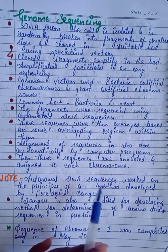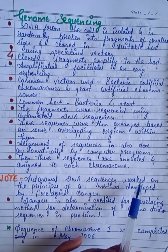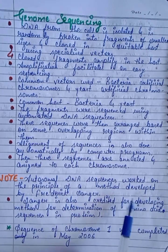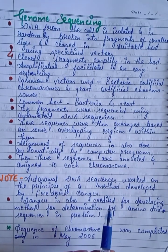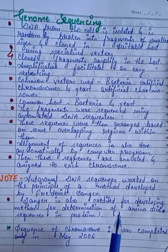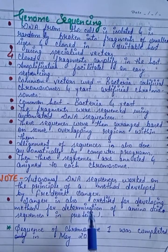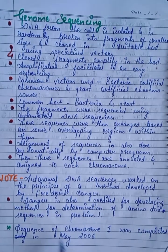Note: Chromosomal DNA sequences are worked on the principle of a method developed by Frederick Sanger. Sanger is also credited for developing the method for determination of amino acid sequence in proteins. The sequence of chromosome 1 was completed in May 2006.